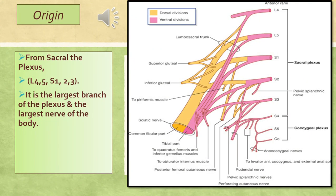A quick recap of the sciatic nerve: its origin is from the sacral plexus with a combined root value of L4, L5, S1, S2, S3. The anterior divisions of the primary rami of L4, L5, S1, S2, S3 all give origin to the tibial part of the sciatic nerve, while the posterior divisions of L4, L5, S1, and S2 give origin to the common fibular part — S3 is entirely part of the tibial nerve. The sciatic nerve is the largest branch of the sacral plexus and the largest and thickest nerve of the body.